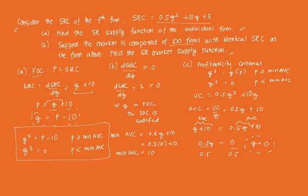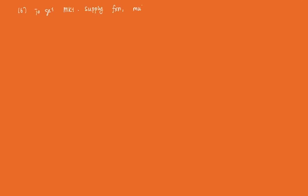Now, how do we aggregate this to get the short-run market supply function? It's actually simple — we just multiply by 100. To get the market supply function, we multiply the firm's individual supply function QS by the number of firms.